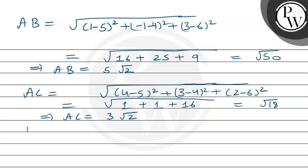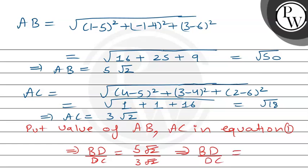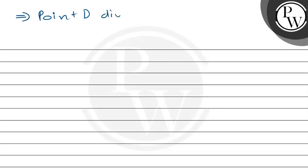Putting the values of AB and AC into the angle bisector equation: BD/DC = AB/AC = 5√2 / 3√2. The √2 cancels, giving BD/DC = 5/3. So point D divides BC internally in the ratio 5:3.